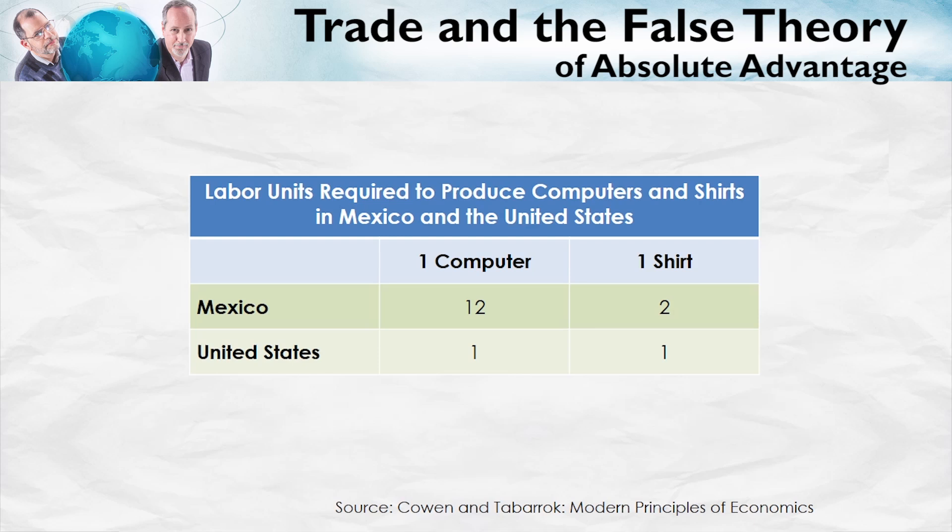Comparative advantage is a theory of trade. It explains why people trade and which goods people should trade if they want to maximize their well-being. It's actually useful to understand comparative advantage by beginning with a false theory — a very plausible but incorrect theory of trade — namely the theory of absolute advantage.